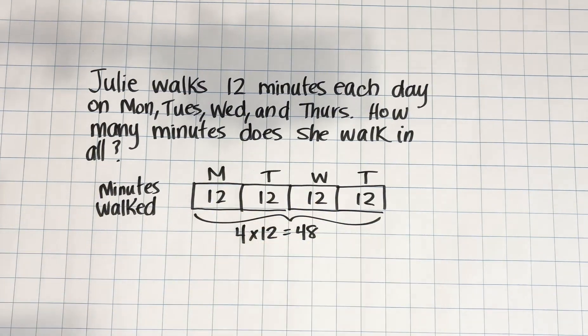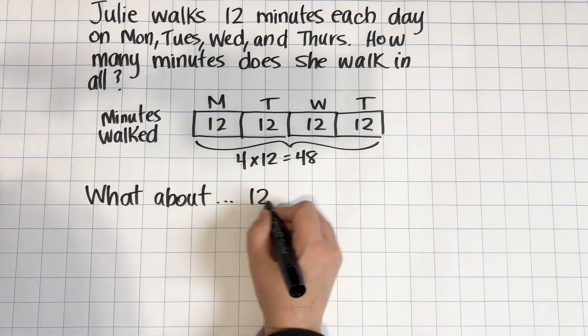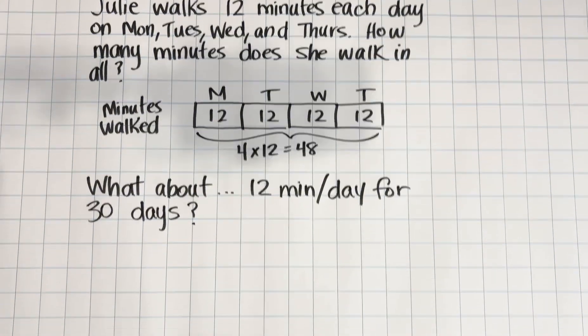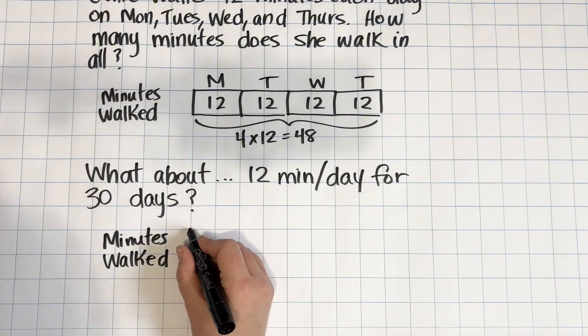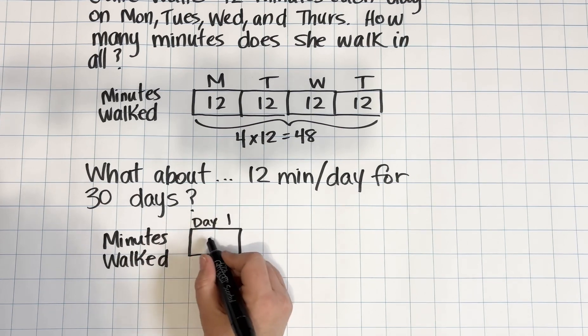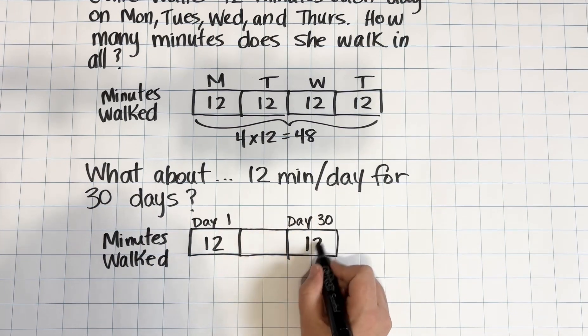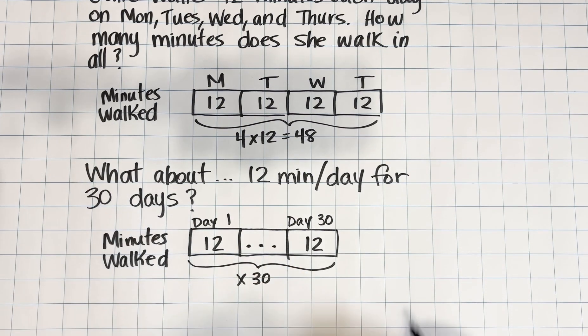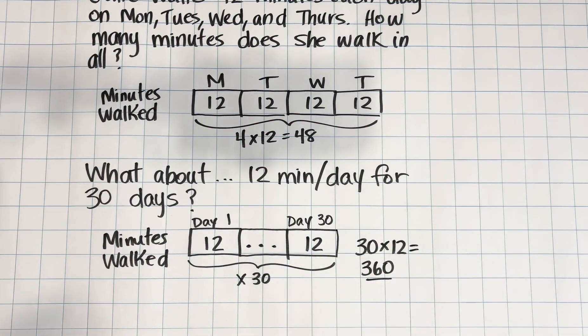Now something that I want to mention that is pointed out by the authors of 8-step model drawing is what to do when we have many groups. So let's look at an example of how this might look if Julie walks 12 minutes a day for 30 days. In this case, it would take a long time to draw 30 parts and we don't want to waste time doing that, so we're going to do something a little bit different. Let's show day one and show day 30, and then in between we're going to use three dots and a bracket to symbolize that we have some parts that are not pictured in the model.